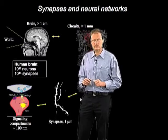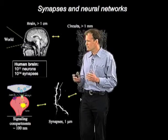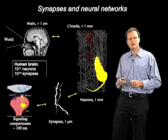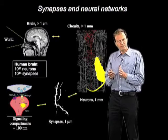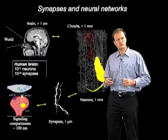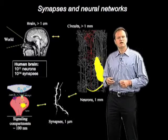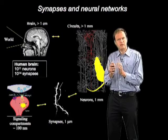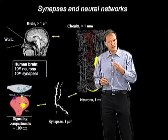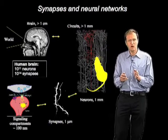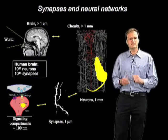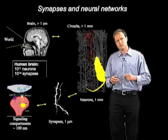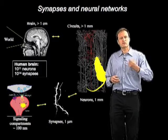Answers to these questions are important because they challenge our understanding of the information processing capacity of the brain. The more independent synaptic transmission is, the larger the information processing capacity of the brain, because there will be more independent information transmission channels. Similarly, in terms of synaptic plasticity, the more independent synaptic plasticity is, the larger the memory storage capacity of the brain, because it can store more bits.